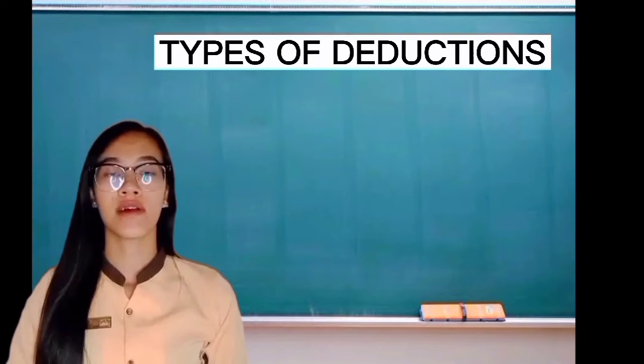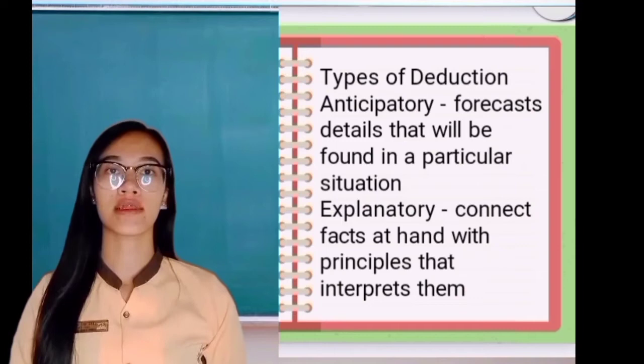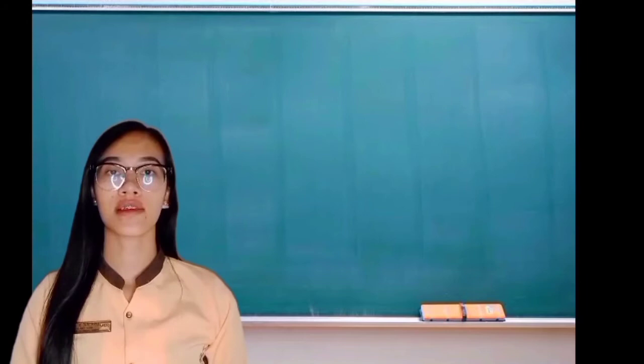There are two types of deduction. First is anticipatory, which refers to forecasting details that will be found in a particular situation. Second is explanatory, which connects facts at hand with principles that interpret them.